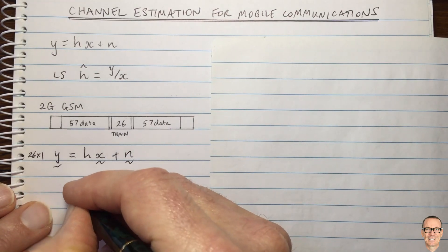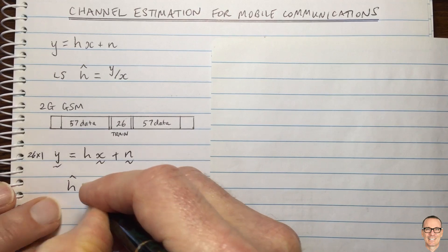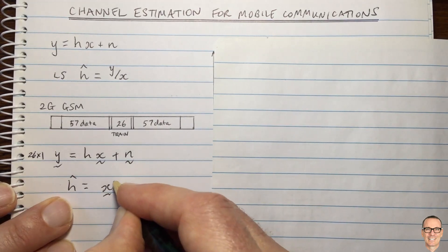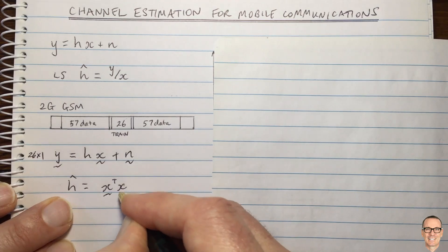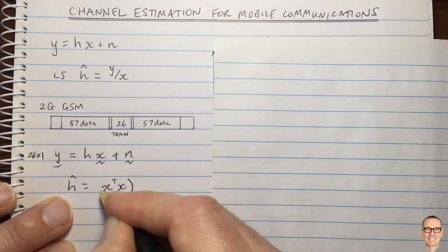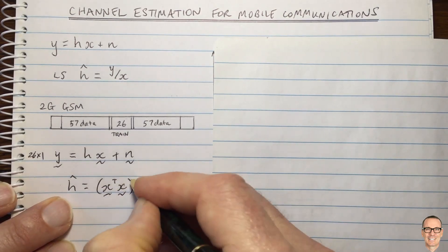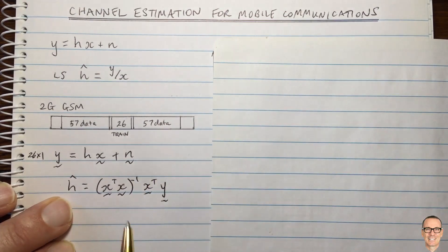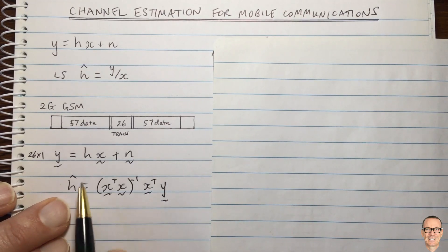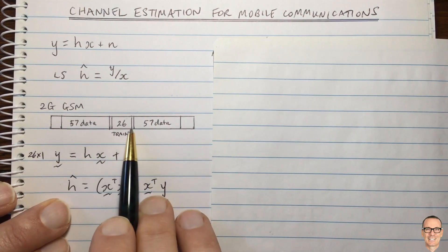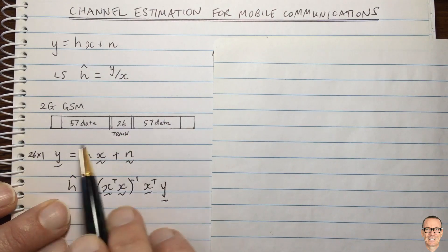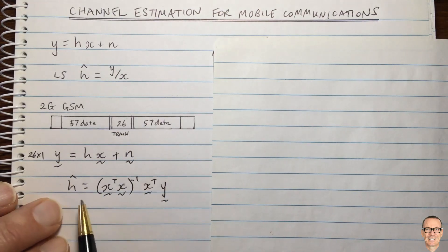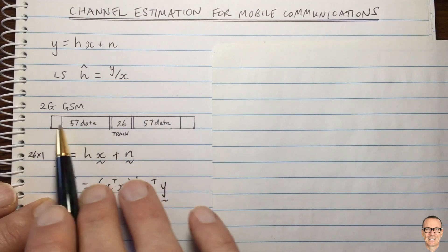In this case the least squares estimate of h is given by x vector transpose to the minus 1 times x tilde transpose times y. It's training data so you know what those symbols are at the receiver, it already knows to expect them. This is the least squares estimate of the channel given 26, or more than one, in this case 26 training symbols. So this is how you estimate if it's a constant channel.